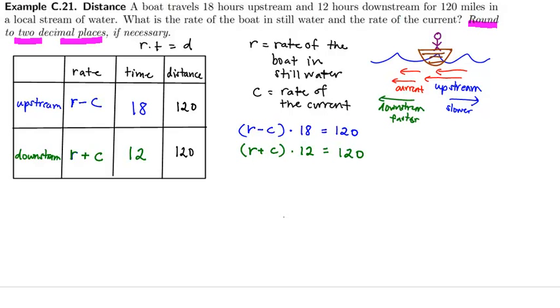So if I wrote this a little nicer as a system of two equations, two variables, as we're used to seeing, I could distribute the 18 to each inside the parentheses and the 12 in the second equation inside the parentheses.